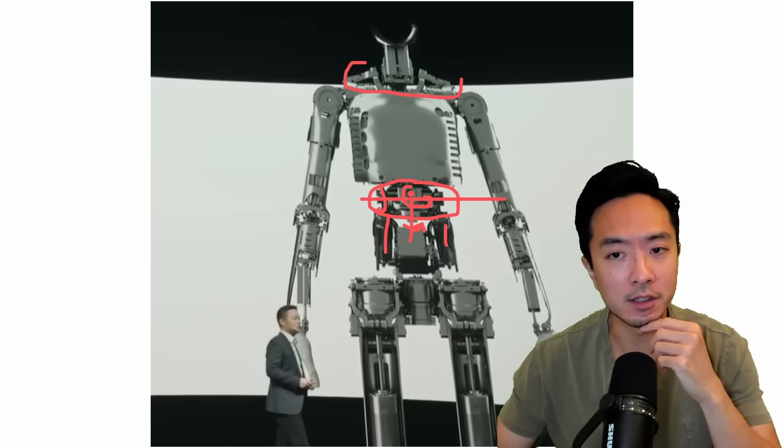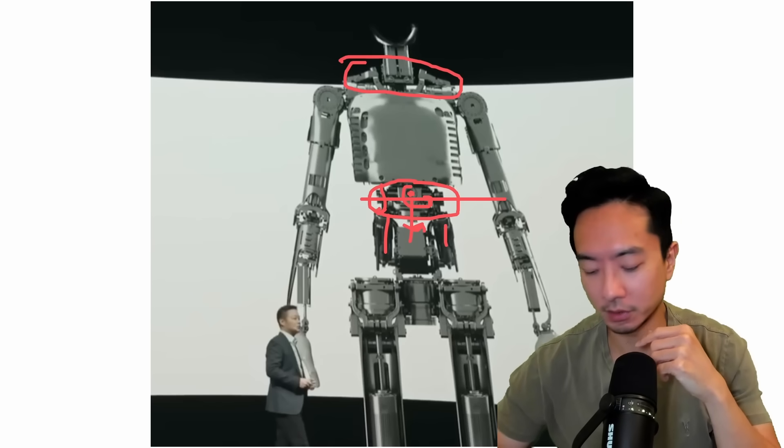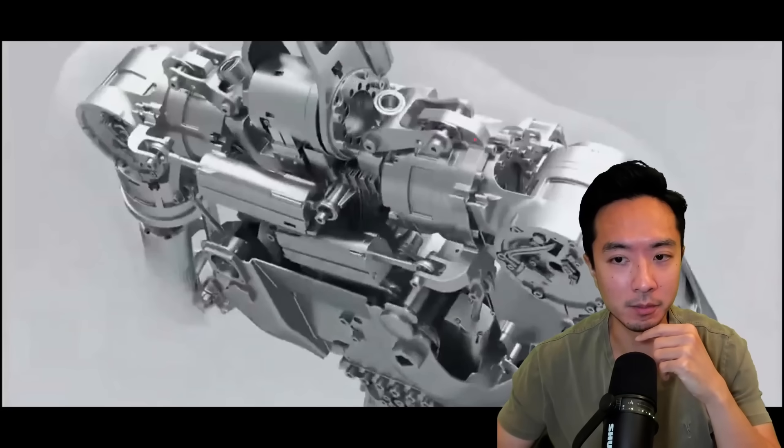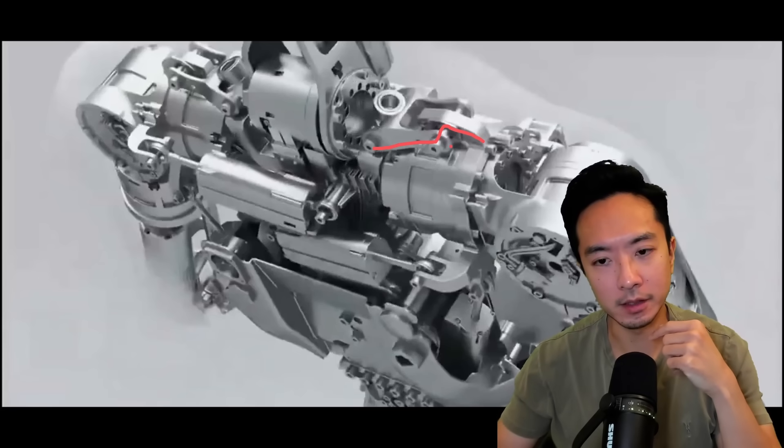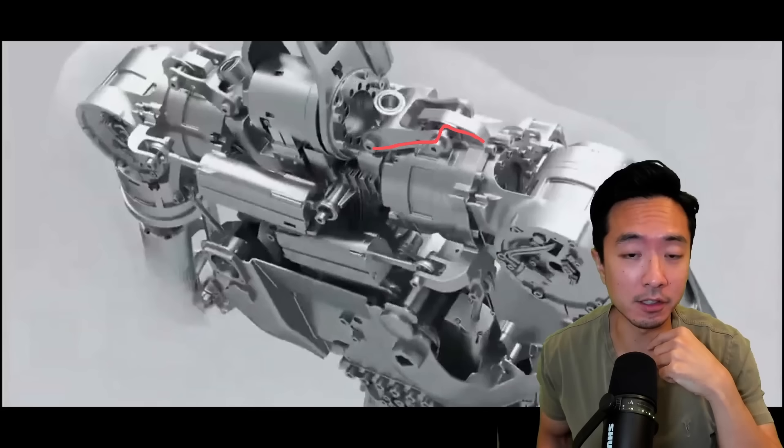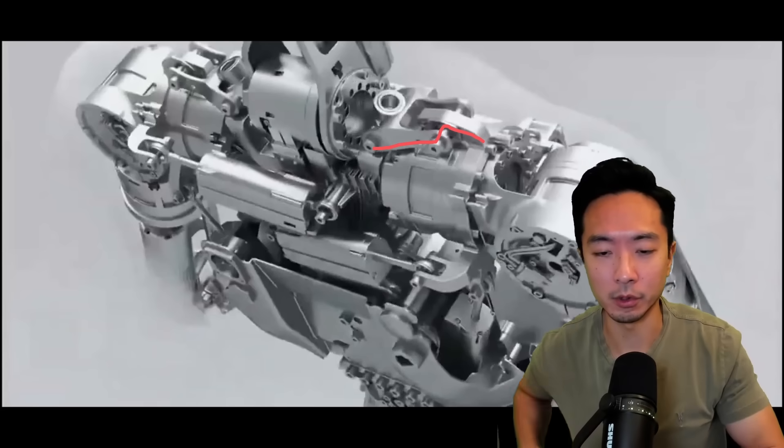You can also see here up on top, this is the shoulder that we talked about. There's some mechanisms here that appear to allow the shoulder to do some shrugging motion. I don't know if that's completely necessary, but that definitely would make it more human-like.